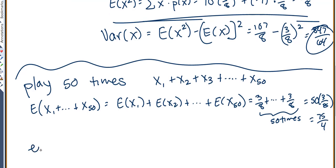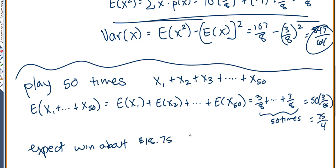So after 50 times, we expect to win about $18.75. Or if we played this many, many times, every time we play 50 games we should win about $18.75 on average.